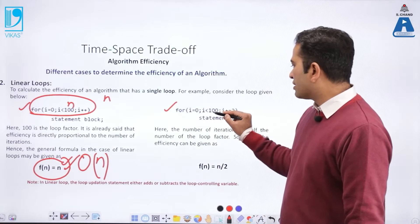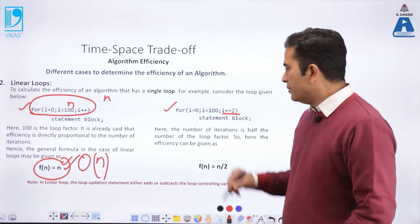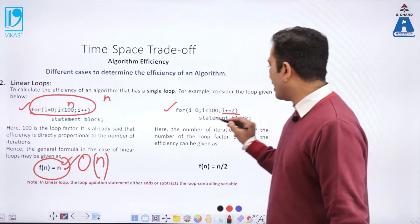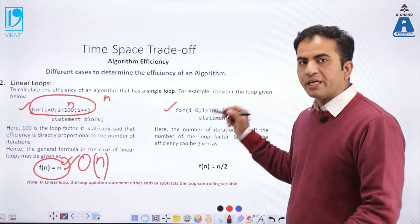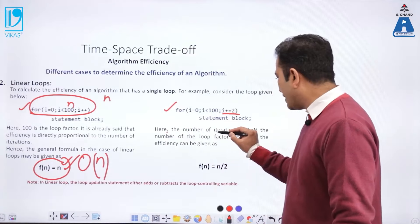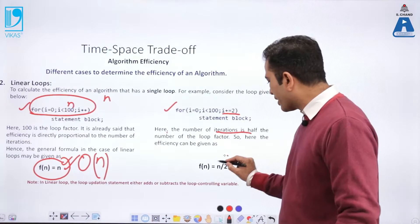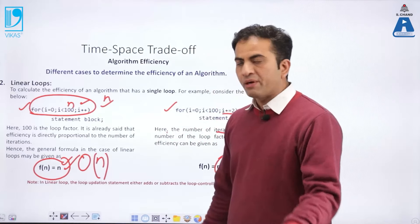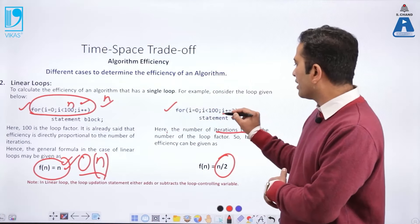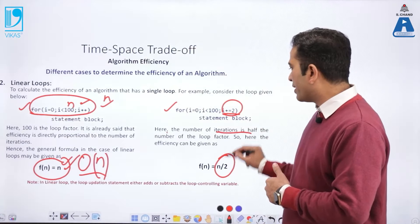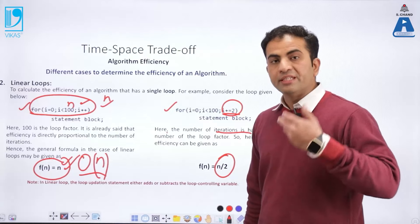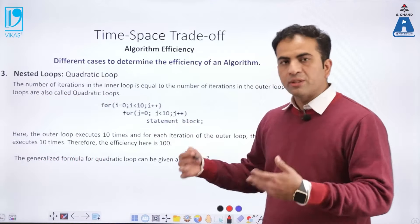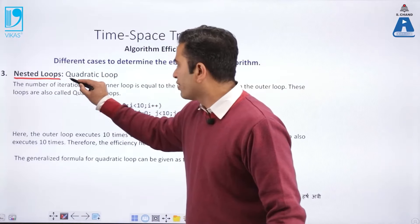Consider a second loop: for(i = 0; i < 100; i += 2). This loop is incrementing by two each time — it jumps two steps at a time. When the loop increments by two, the number of iterations is half, so the complexity becomes n/2. If the loop increments by three or four, complexity becomes n/3 or n/4. This is the concept of the linear loop.